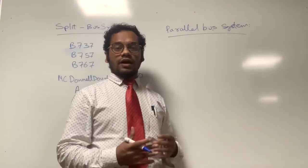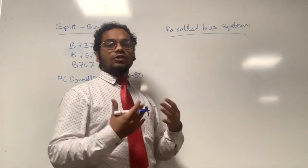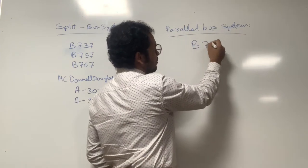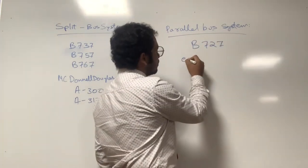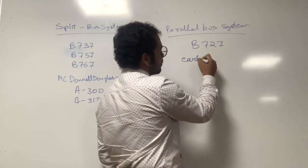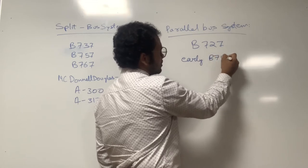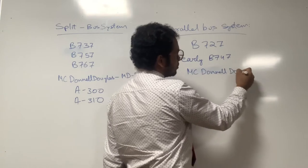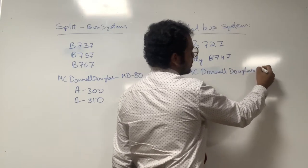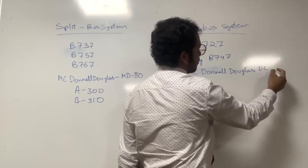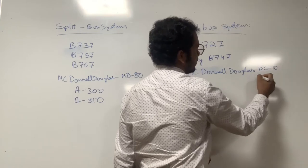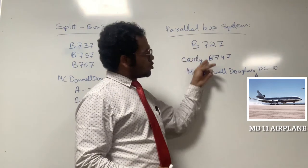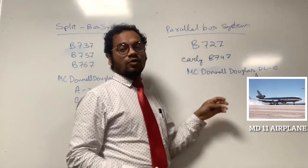The parallel bus bar system is used in aircraft having three or more than three engines, like the Boeing 727, early Boeing 747, and in McDonnell Douglas aircraft — we have the parallel bus bar system in the DC-10 and MD-11. So the parallel bus bar system is used in planes which have three or more than three engines.